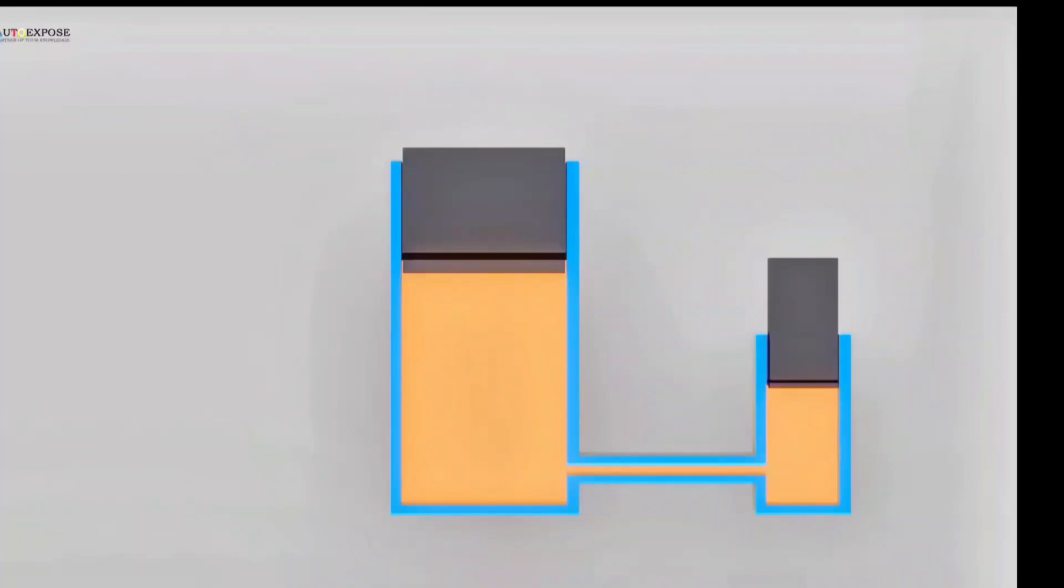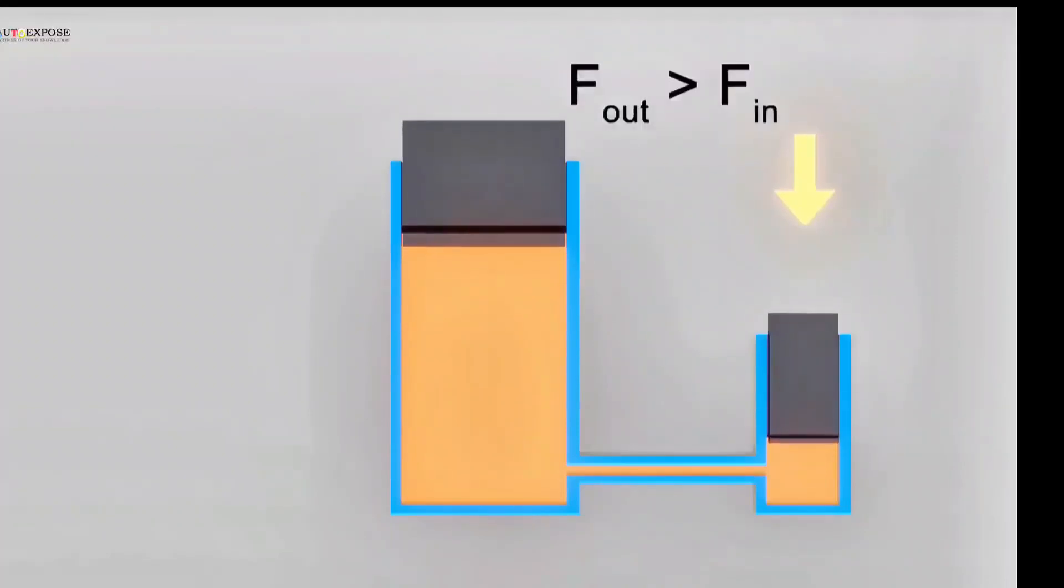For example, consider the two pistons in the following cylindrical container. The input piston has a smaller surface area than the output piston. If we apply a certain force to the first piston, the lifting force produced by the second piston will be much greater than the input force.